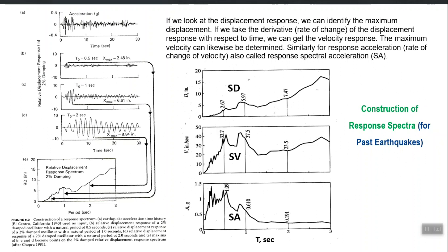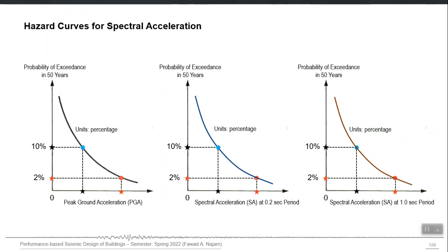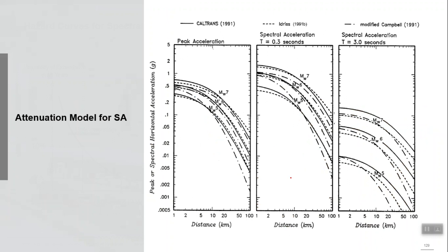The response spectrum for a future earthquake can be predicted from PSHA by picking numbers from different hazard curves. For a given hazard definition such as 10 percent probability of exceedance in 50 years, we perform PSHA for different spectral accelerations and PGA. We pick the number at 10 percent from each hazard curve — PGA, then spectral acceleration at 0.2 second, 0.5 second, 1 second, 2 second, 3 second — and construct the future earthquake spectrum.